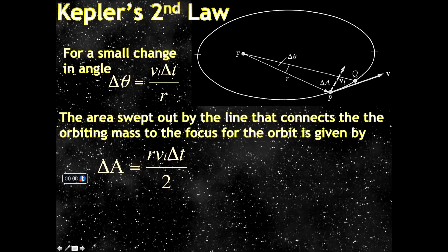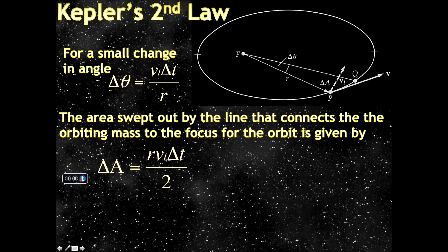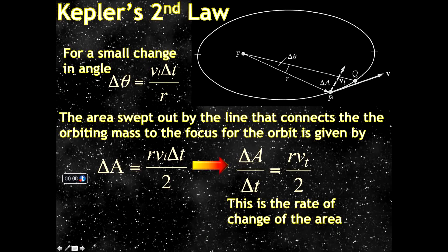We care about the area swept out by the line connecting the Sun to the planet. We can ignore the tiny curved segment, and say the area is given by one half times base times height: the base is Vt·delta_t and the height is r. So the change in area gives us delta_A over delta_t equals r times the tangential velocity over 2. This is the rate of change of area.